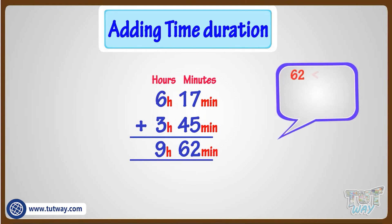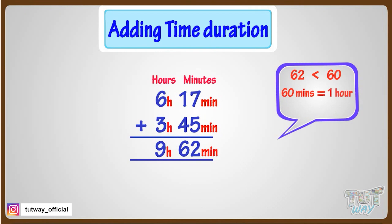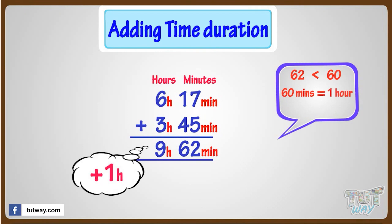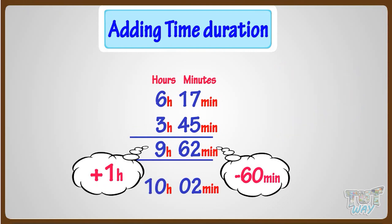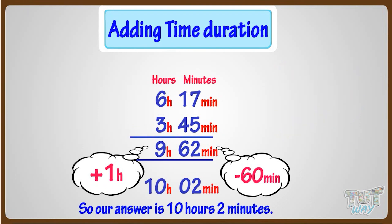Here, the minutes are more than 60, and we know 60 minutes make an hour. So add 1 to the hours and subtract 60 from minutes. Subtracting 60 from minutes, we will be left with 2 minutes. And by adding 1 to the hours, we get 10 hours. So our answer is 10 hours and 2 minutes.